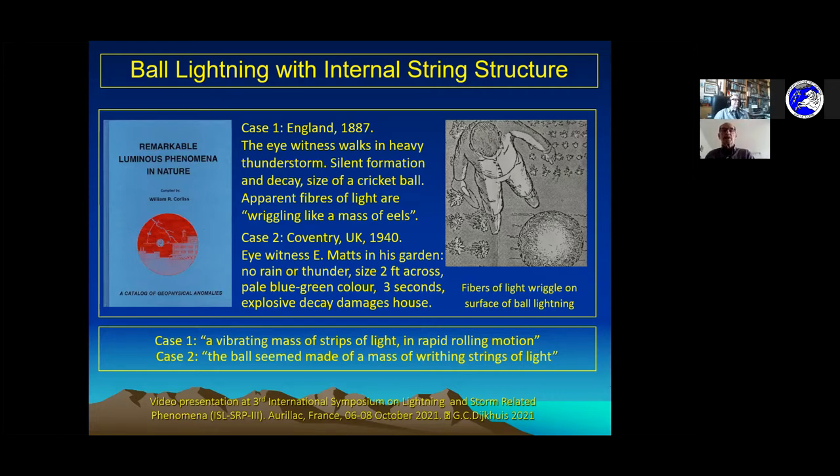From this book I have selected a case which is important for my model I will develop. This picture you see is a drawing in this book which does give the structure of the ball lightning. Professor Nikitin was also talking about what the structure of ball lightning is. Well, it can have many appearances and one of them is this. I selected it because there is this expression about the structure, and the observer on the right describes the structure as the light of the ball lightning was wriggling like a mass of eels.